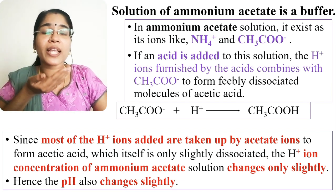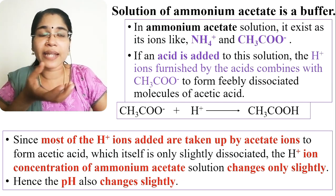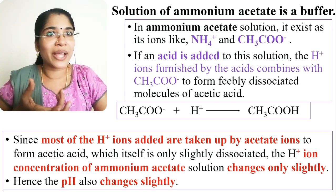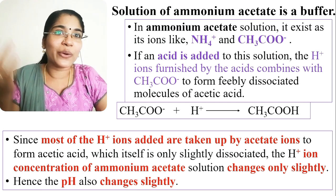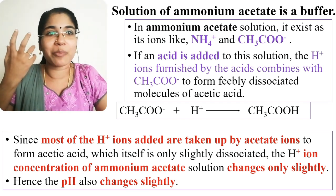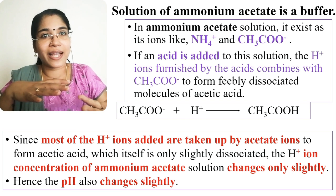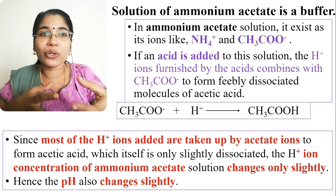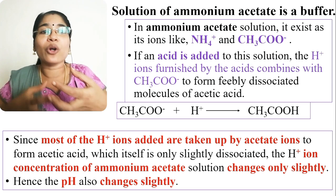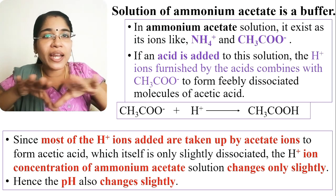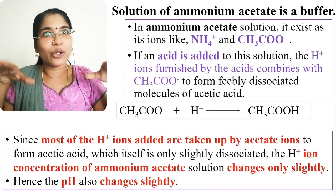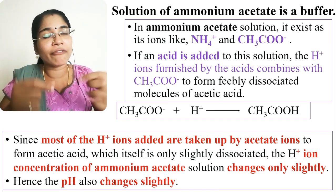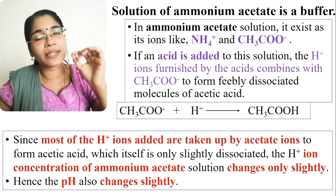All of the H⁺ ions added are taken up by the acetate ions — CH3COO⁻ accepts H⁺ ions to form acetic acid (CH3COOH), which is feebly dissociated. That means only a slight variation in H⁺ ion concentration will happen, and therefore the pH also changes only slightly.